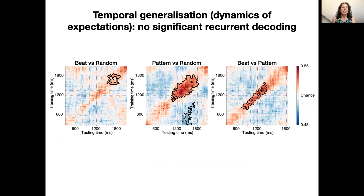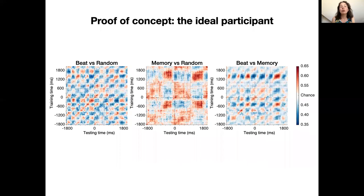Here you see the actual decoding results from our experiment. You can see above chance decoding in the red colors, and significant clusters are indicated by the black lines. As you can see, we can decode above chance from the silence what participants were listening to before. However, the decoding is not specific to expected moments, neither is it recurrent in time. Therefore, we think it is probably based on task-related differences in the EEG signal.